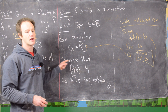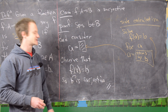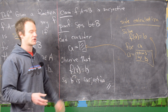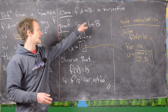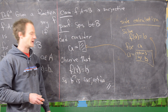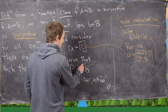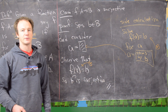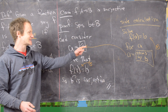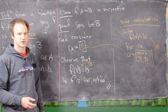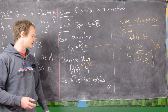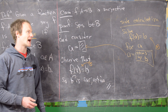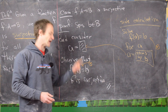The next thing we do is say something like 'observe that' or 'notice that' — conveying the idea that when you plug this value of a, which we've grabbed from the side calculation, into our function, we get our arbitrary b from the codomain. This calculation is exactly the reverse of what we did when we solved for a. That's how the side calculation shows up in the proof — in reverse. This equation shows that f is surjective.